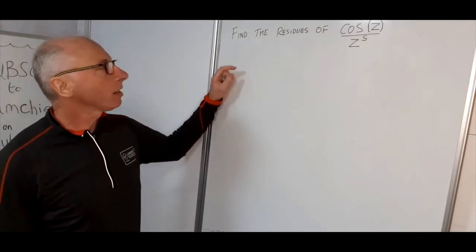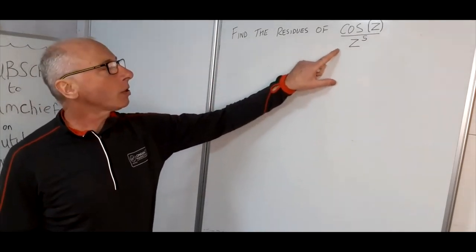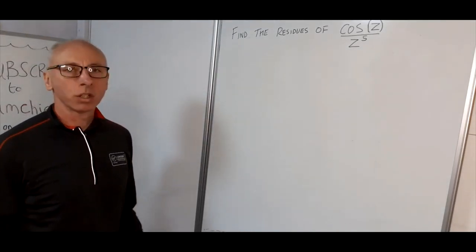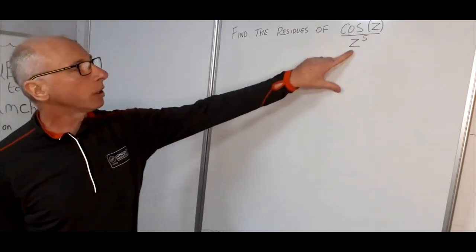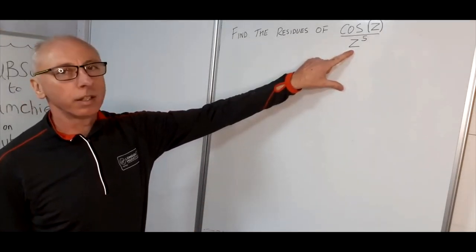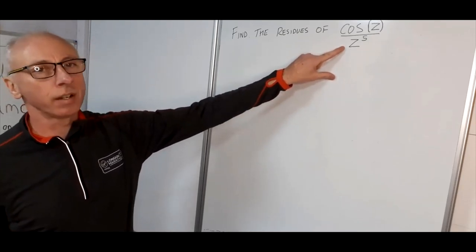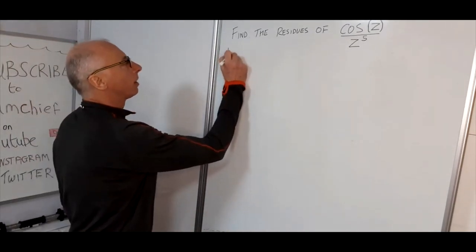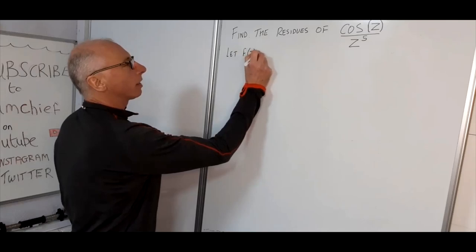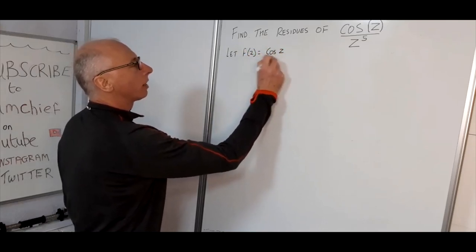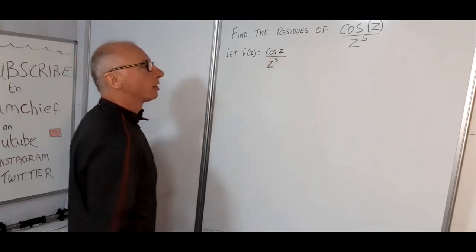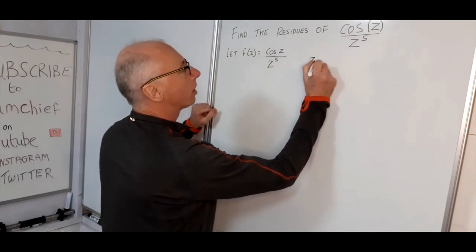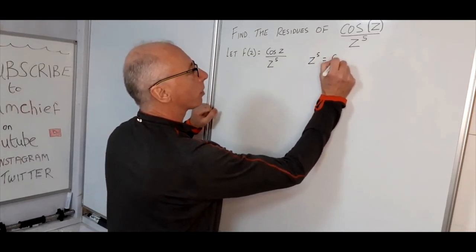Let's have a look at some complex analysis. We are going to find the residues of cosine of z divided by z to the power of 5. The residues of any complex function are found when there is a singularity, so what we are looking for is when the denominator equals zero — that is, z to the 5 equals zero.